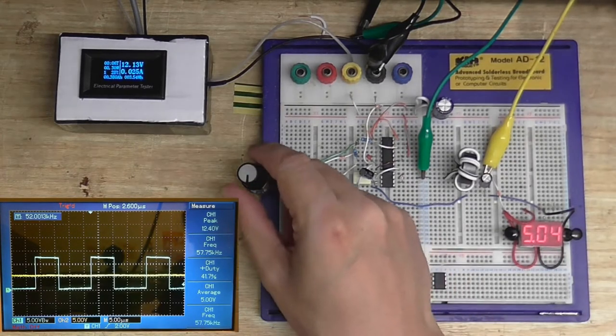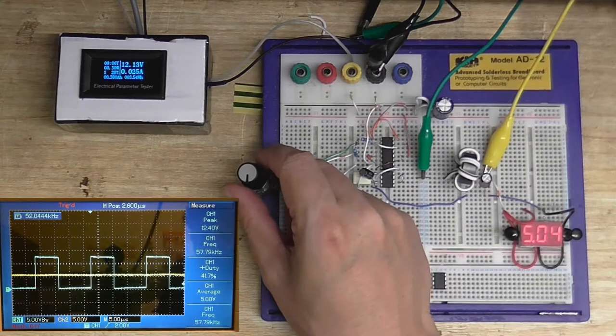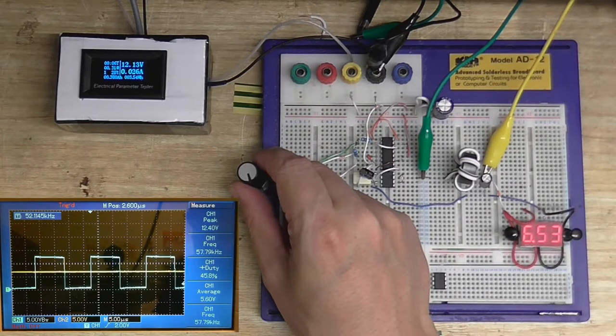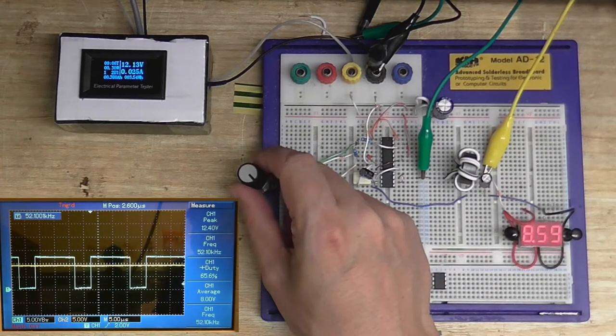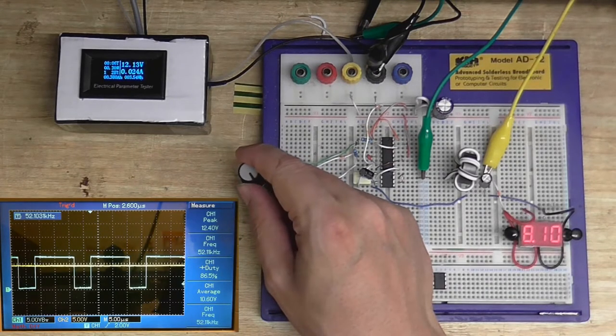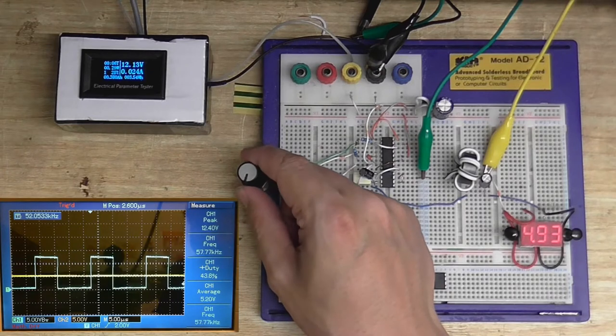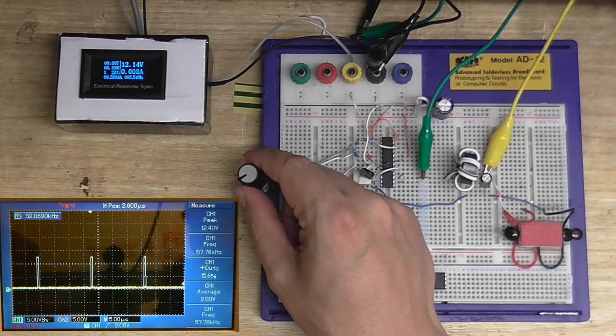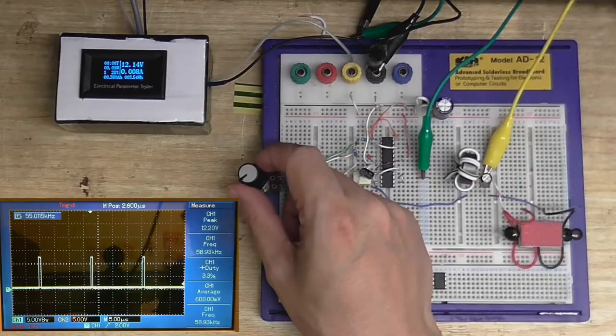So I'm going to adjust the duty cycle. And if you'll notice, when I make the duty cycle fatter, the voltage goes up, and when I make the duty cycle thinner, the voltage goes down.